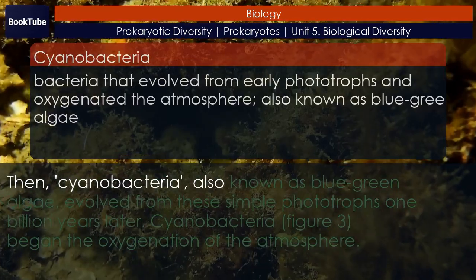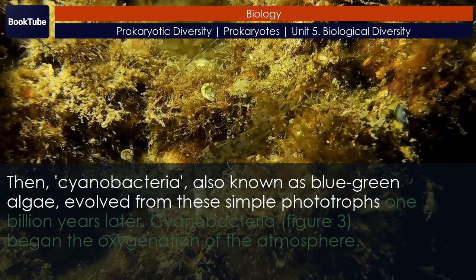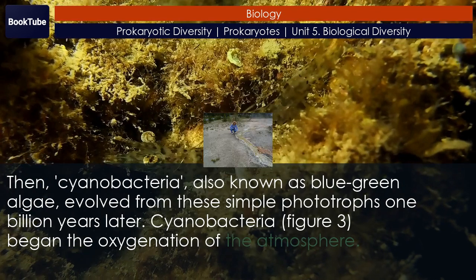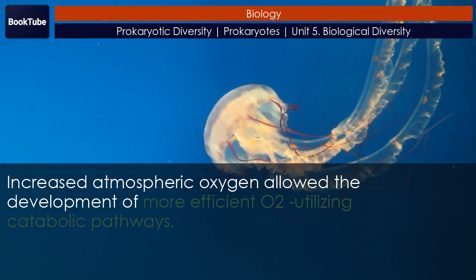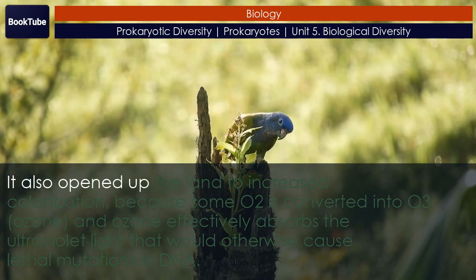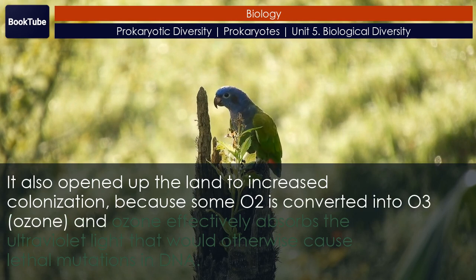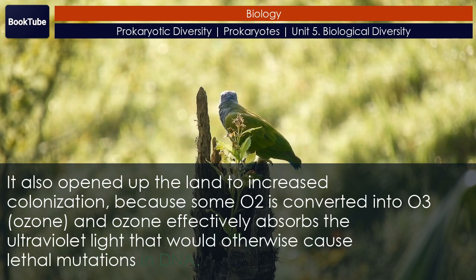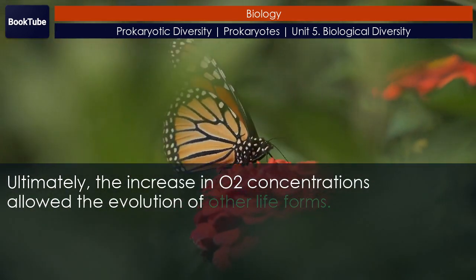Then, cyanobacteria — also known as blue-green algae — evolved from these simple phototrophs 1 billion years later. Cyanobacteria (Figure 3) began the oxygenation of the atmosphere. Increased atmospheric oxygen allowed the development of more efficient O2-utilizing catabolic pathways. It also opened up the land to increased colonization, because some O2 is converted into O3 — ozone — which effectively absorbs the ultraviolet light that would otherwise cause lethal mutations in DNA. Ultimately, the increase in O2 concentrations allowed the evolution of other life forms.